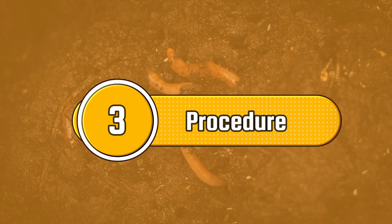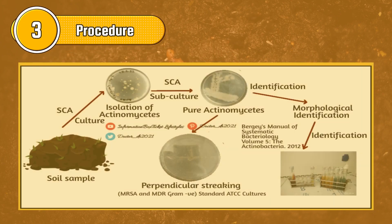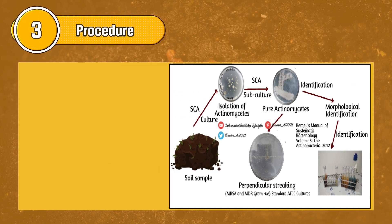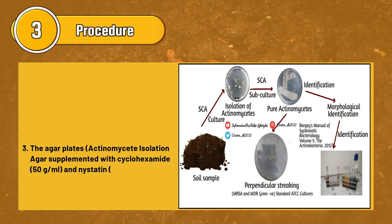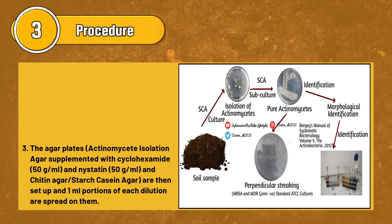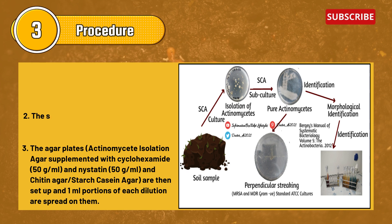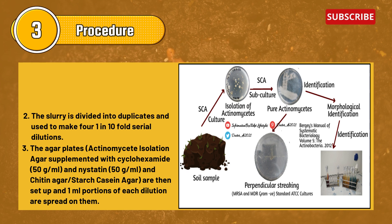Now let's understand the procedure of isolation of actinomycetes with the help of this diagram. First, we begin by making a soil slurry by combining one gram of collected dry soil with 10 ml of distilled water. A vortex is used to stir the slurry for two minutes. The slurry is then divided into duplicates.